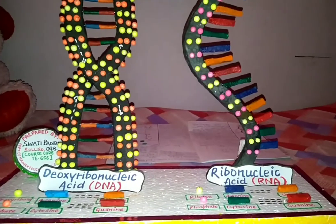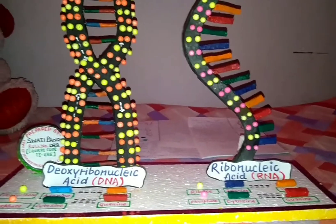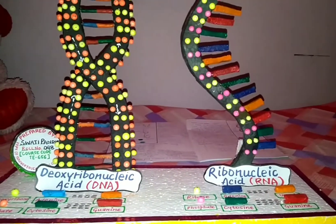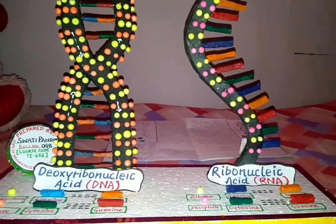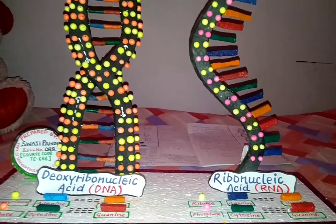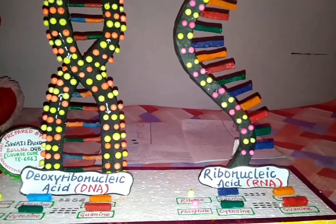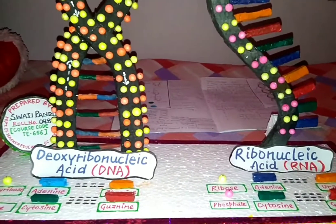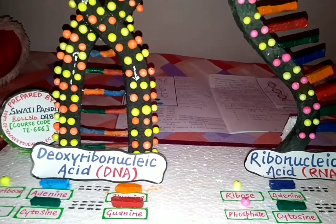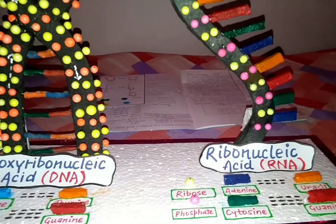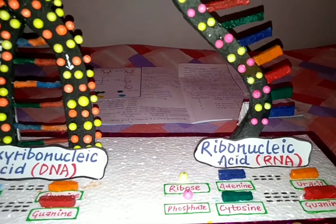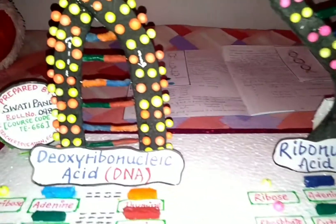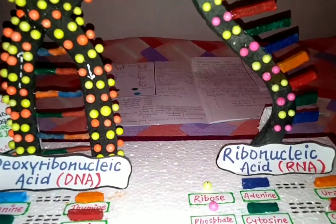The purpose of presenting DNA and RNA together is to differentiate between them. DNA is a double stranded structure whereas RNA is a single stranded structure. DNA consists of adenine, thymine, cytosine, and guanine, whereas RNA consists of adenine, uracil, cytosine, and guanine. Uracil is replaced by thymine, as shown here.